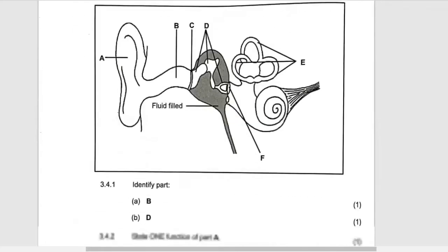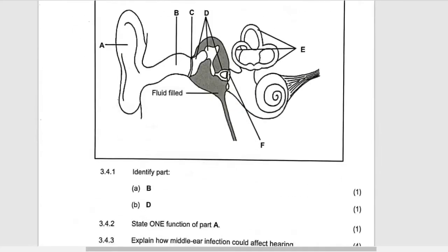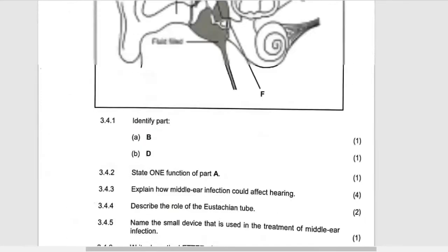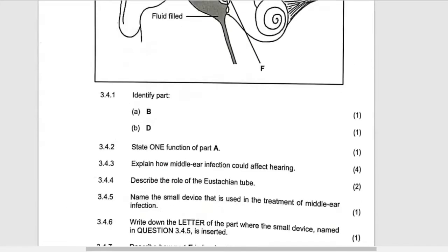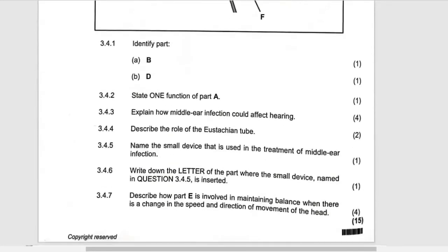Identify part B. We've seen it, which is auditory canal. And then part D, which is ossicles, which are the three bones in the ear.